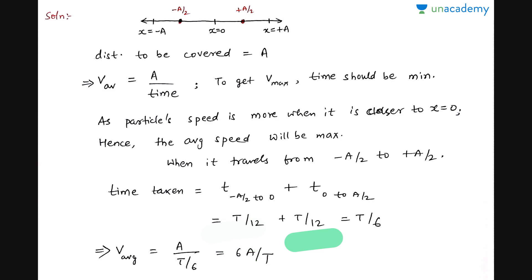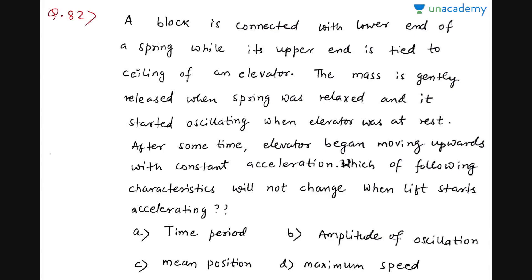To understand how T/12 time arises, you can watch the 'time taken for a moment' lesson from the course. To understand how speed changes with displacement, watch the 'motion of particle in SHM' videos — there are two videos. Phase calculation, speed calculation, writing the equation of SHM, and spring-mass systems and pendulums are more important than other topics for NEET. I would really recommend watching lessons 2 to 9 or 10 from the course to get a solid understanding of SHM basics and motion.